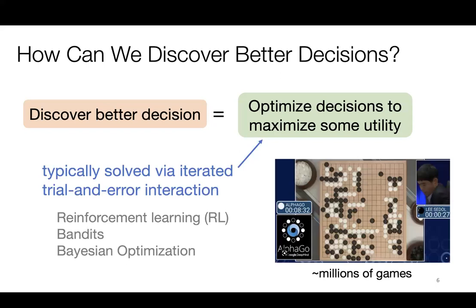These fields typically solve these problems by running some kind of iterated trial-and-error with a simulator. For instance, in the game of Go, reinforcement learning techniques secured a very big win by playing the game millions of times, seeing feedback, and learning from that feedback to outperform the best human player on the planet. So clearly, if given enough interaction, these techniques can work amazingly well and can solve the problem of discovering better decisions.